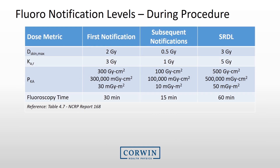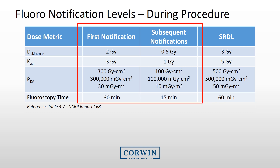It is recommended that notification levels be established to inform fluoro operators during a procedure when a designated level is exceeded. At that point, the operator should determine whether the radiation risks are warranted and if the procedure is to continue. Recommended notification levels include peak skin dose, air kerma at the reference point reported in gray or milligray, and the air kerma or dose area product. Once the first notification occurs, continue notifying the operator at subsequent notification levels.